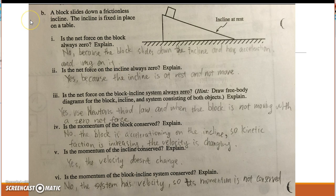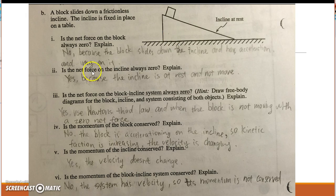Part B, question 1: the net force on the block is not always zero because the block is sliding down the incline and has acceleration due to gravity on it. Question 2: the net force on the incline is always zero because the incline is at rest and not moving.